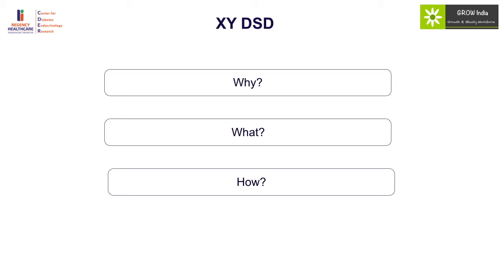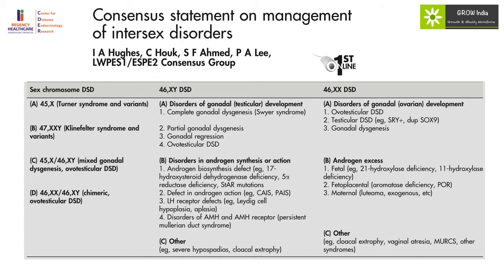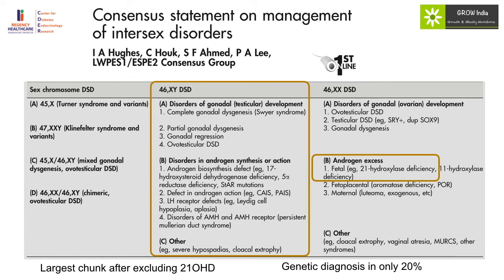XY DSD comprises a significant proportion of children who present with disorder of sexual differentiation, and after excluding 21-hydroxylase deficiency, they by large represent a very large section. Importantly, the genetic diagnosis could accurately be identified in only 20% of cases. Many of us will say that we can manage these individuals without actually establishing a genetic diagnosis — but I highlight a couple of cases which will show the importance of genetic diagnosis in this setting.